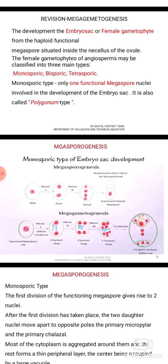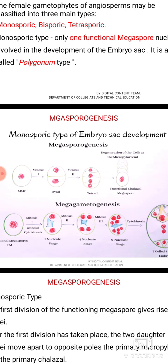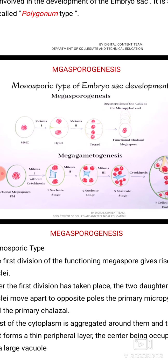This functional chalazal megaspore undergoes mitosis without cytokinesis to give rise to two nuclei, which move to opposite regions. At the opposite regions, the nuclei undergo a mitotic division, resulting in formation of two nuclei at each polar region — the four-nucleate stage. Later it undergoes one more, that is a third mitotic division, resulting in formation of four nuclei at each polar region.